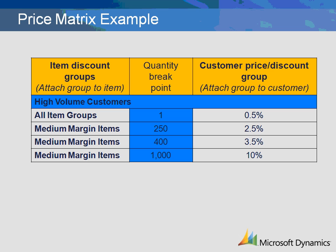Before setting up the pricing, it is helpful to set up a price matrix outlining how the discount will be granted. Who will receive the discount? This will define the customer multi-line discount groups. In this offer, we are only offering multi-line discounts to high volume customers. What groups of items will receive the discount? This will define the item multi-line discount group. In this example, we are granting discounts on medium margin items.